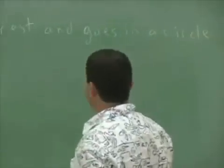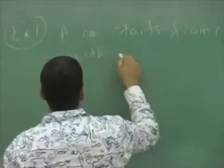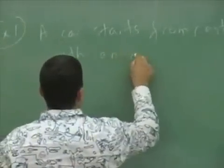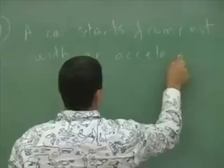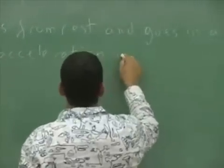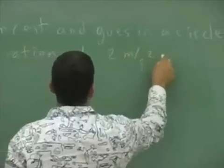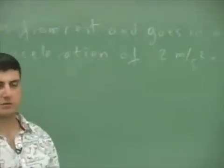So a car starts from rest and goes in a circle, with an acceleration of 2 meters per second squared.